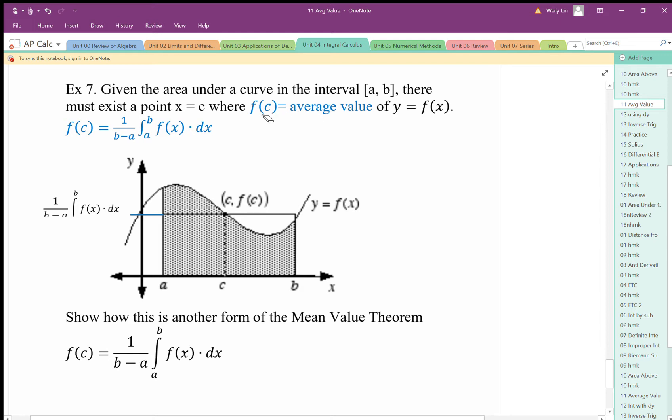So the average value of the function, average value of this f of x function, is the area underneath this curve made into a rectangle divided by the width, which gives you this height here, that blue line there.